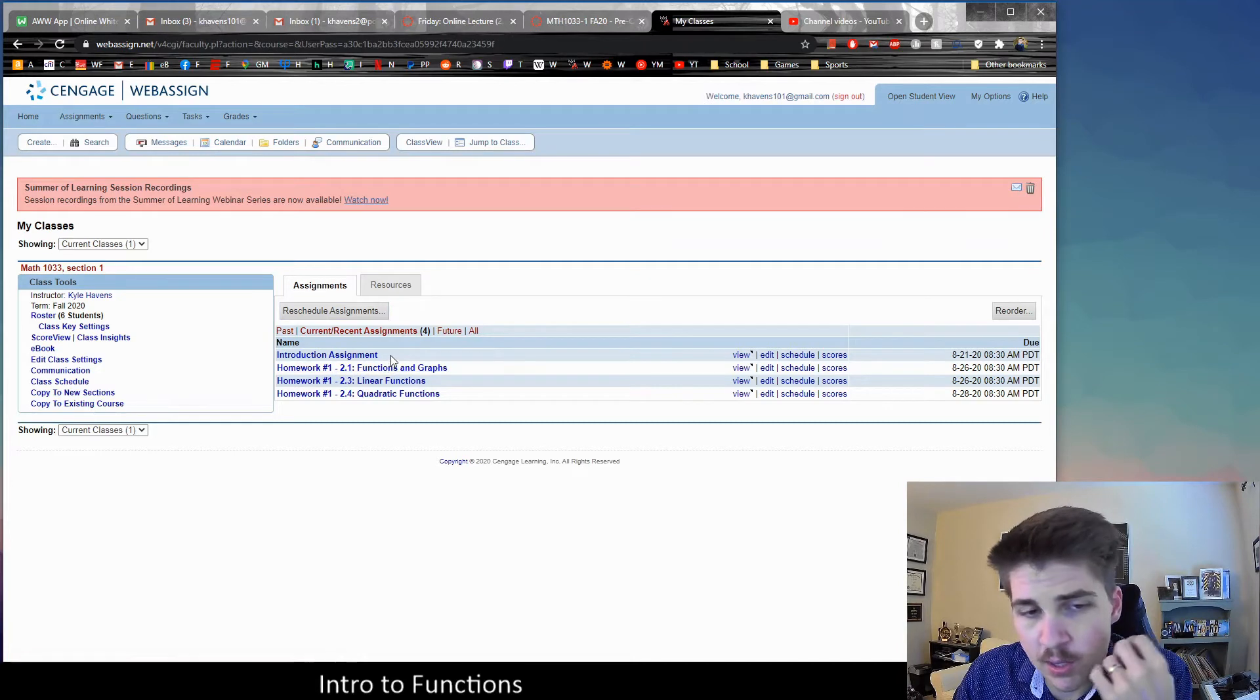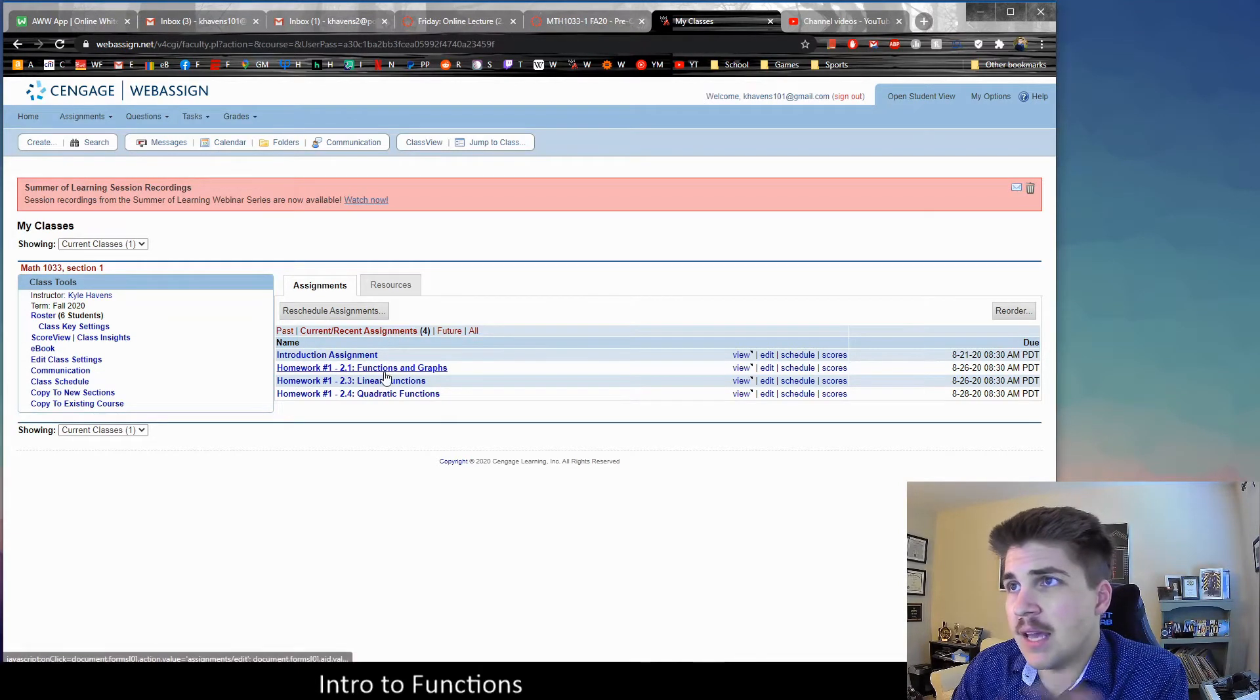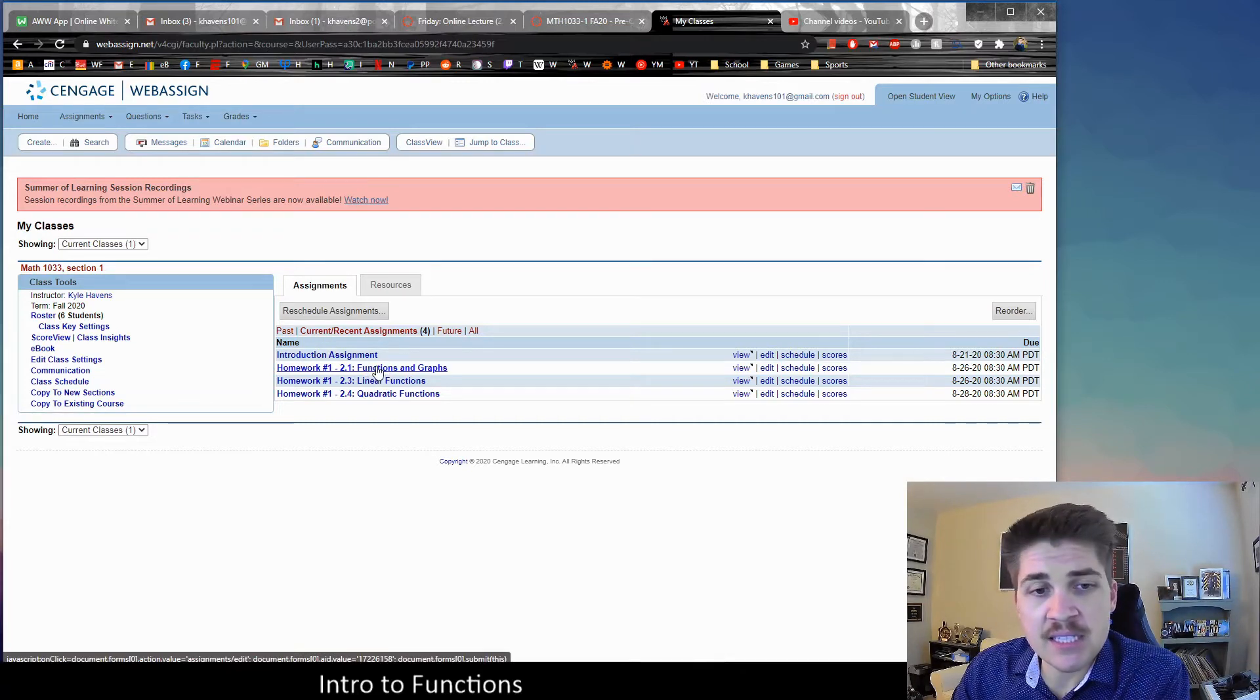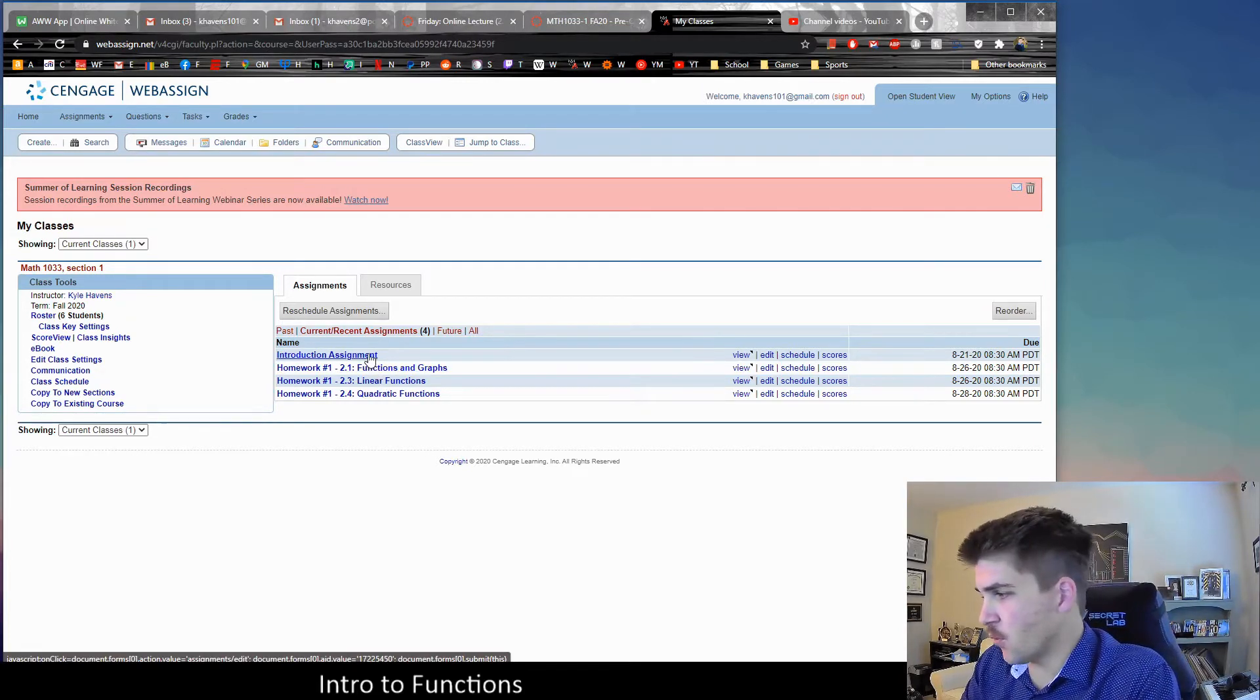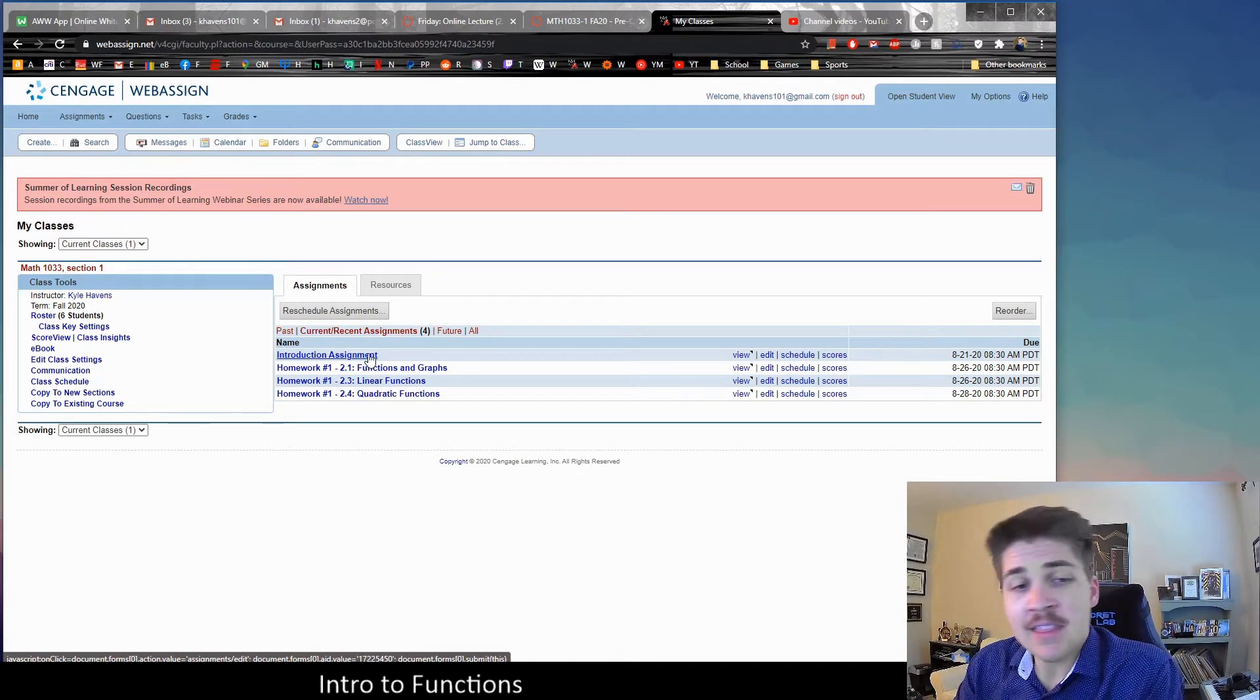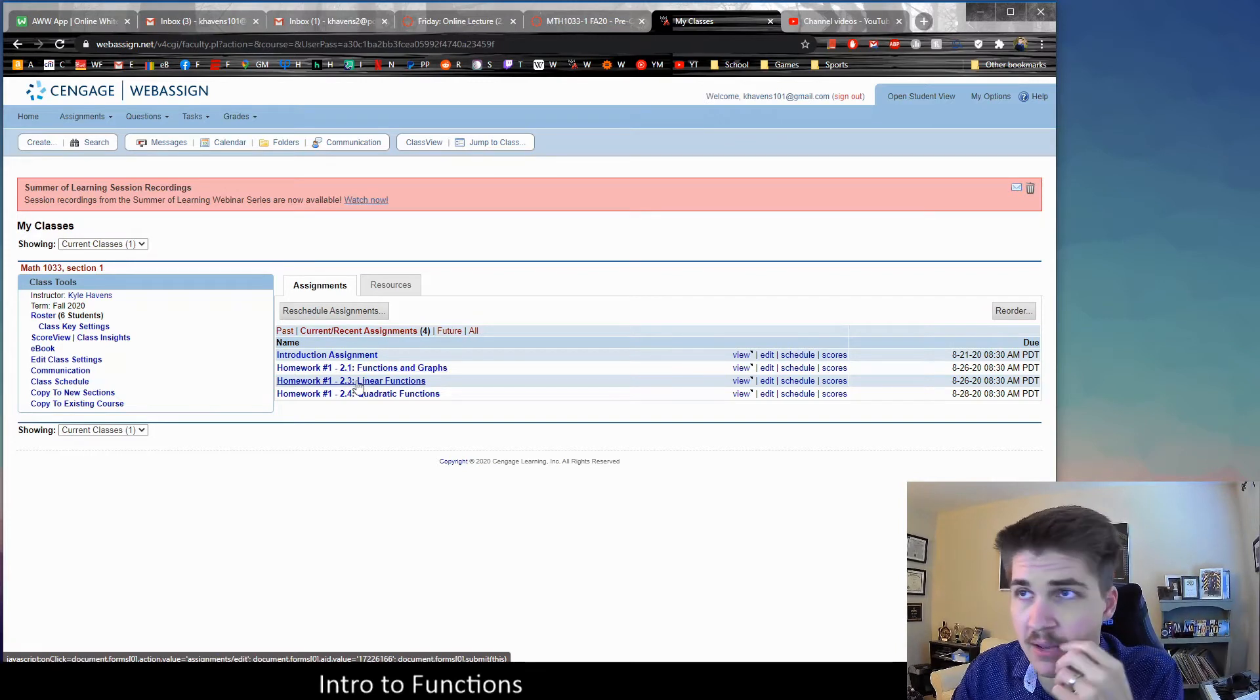How I've arranged the assignments in WebAssign is for each section. In Canvas, this is because when I first created the course, we weren't planning on having it fully online before everything switched over. Usually we have individual homework assignments consisting of written problems submitted in person. But since we've transitioned to online homework, I decided to just break them down into each individual section, because I think that's easier.